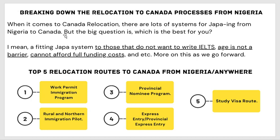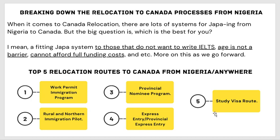When it comes to Canada relocation, there are lots of systems for you to Japa from Nigeria to Canada, but the big question is which is the best for you. Let's check out the top five immigration routes to Canada from Nigeria. Number one is work permits. Number two is the rural and northern immigration pilot program. Number three is the provincial nominee program. Number four is express entry. Number five is the study visa route.